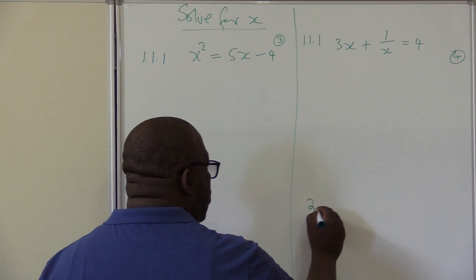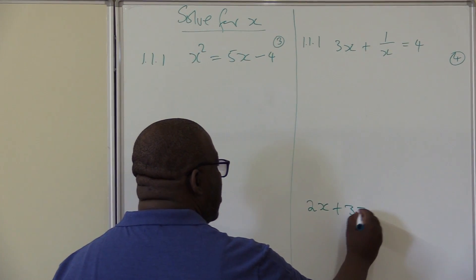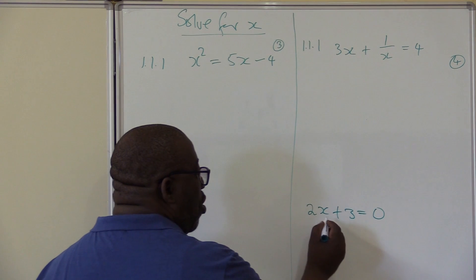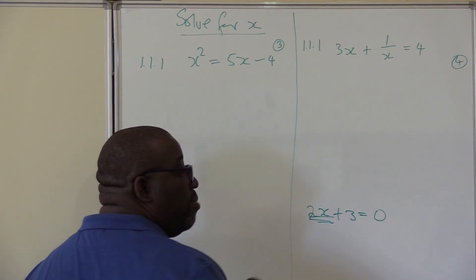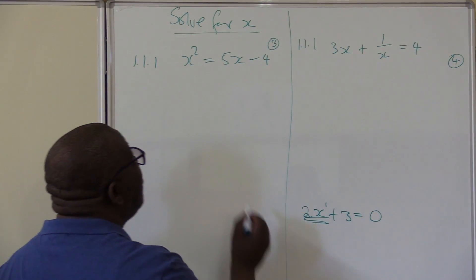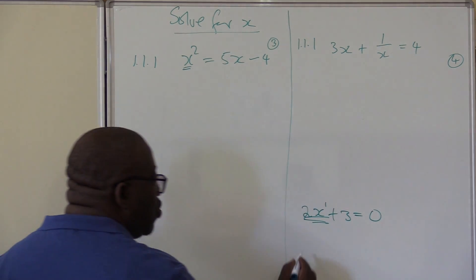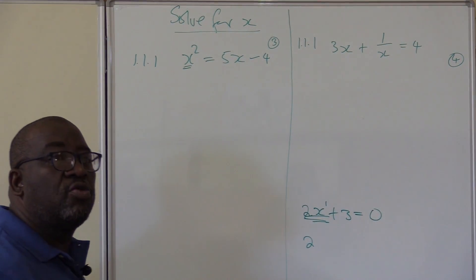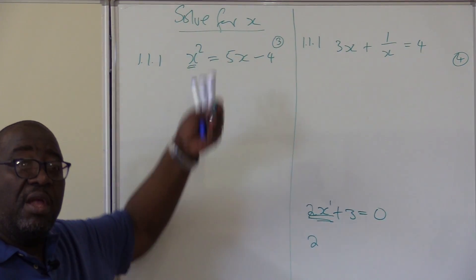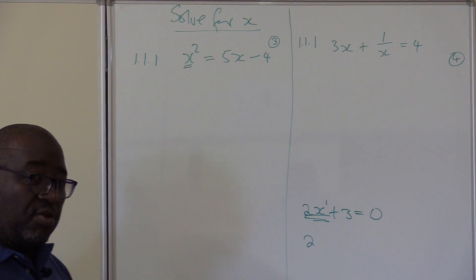Another thing that is important I want you to take note of: if 2x plus 3 equals anything, you are going to have one value of x because this x is to the power 1. Once you have x to the power 2, you are going to have two values of x. If this x is to the power 3, you are going to have three solutions.